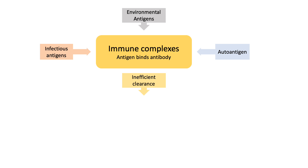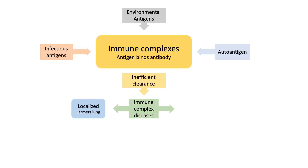Inefficient clearance of immune complexes results in accumulation of the immune complexes in the body, and then they might be deposited locally — for example, in the case of farmer's lung, where inhaled antigens result in deposition of immune complexes in the lungs — or systemically, in the case of systemic lupus erythematosus and nephritis.